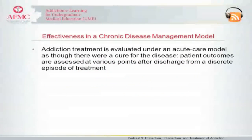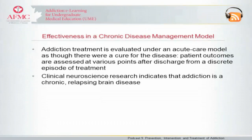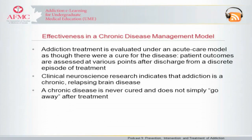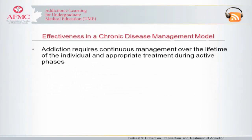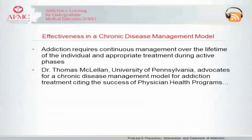Addiction treatment is evaluated under an acute care model, as though there were a cure for the disease, with patient outcomes assessed after discrete episodes of treatment. However, clinical neuroscience research indicates that addiction is a chronic, relapsing brain disease. By definition, a chronic disease is never cured and does not simply go away after treatment — it requires continuous management over the lifetime of the individual and appropriate treatment during active phases. Dr. Thomas McClellan is the director of the Center on Substance Abuse Solutions at the University of Pennsylvania, and he advocates for a chronic disease management model for addiction treatment, citing the success of physician health programs.